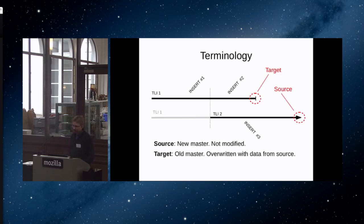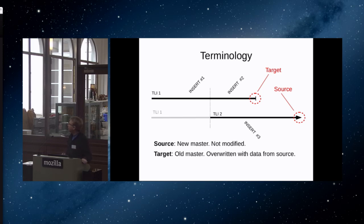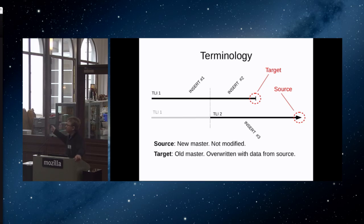Some terminology: we call the new master — what used to be the standby server that was promoted — the source. The old master that you want to turn into the standby server, that you failed over from, we call the target. The source server, which is now the master, is not modified at all — we're only reading from it. Just like with rsync, we would only be reading from the source and copying over to the target, which is the old master server.